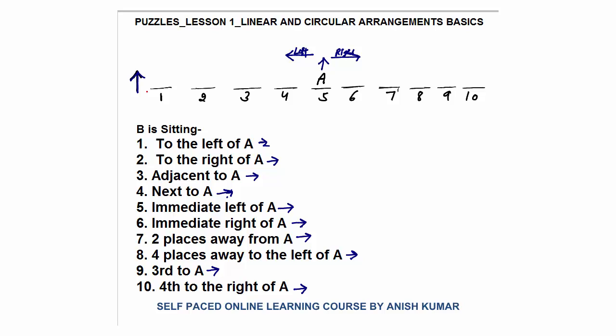I will tell you the position of B with respect to A. Once you are able to identify these positions, they will be used in the questions and you will solve them faster. First: B is sitting to the left of A. The left of A includes seat numbers four, three, two, and one. Since the question doesn't specify which seat, we cannot determine where exactly B is sitting.